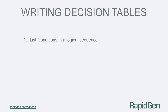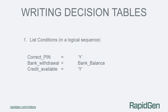The first thing is to list your conditions. In theory it is possible to list your conditions in any order, but in practice it is better to list them in a logical order as this can speed up the evaluation and processing of the decision table. In our example we have the conditions: correct pin entered, bank withdrawal is less than the bank balance, and credit available.